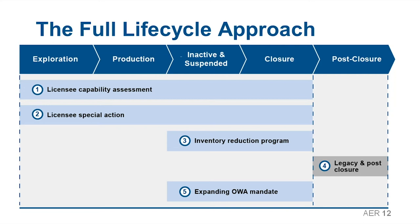The Government of Alberta policy encompasses the full lifecycle of energy development. The Licensee Capability Assessment will be leveraged throughout all stages of decision making, and the business intelligence will be used to assess licensees through the Licensee Special Action to ensure they are capable of managing and addressing their regulatory and liability obligations from exploration to closure. The Inventory Reduction Program introduces new mitigation tools including closure targets and an opt-in mechanism for landowners. When there is no responsible party, the OWA steps in with its expanded authorities through Bill 12, with continued policy gaps for legacy and post-closure sites requiring further evaluation.